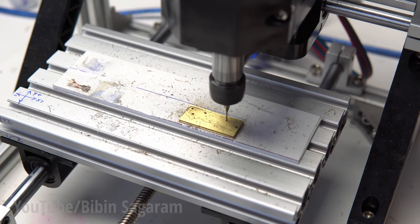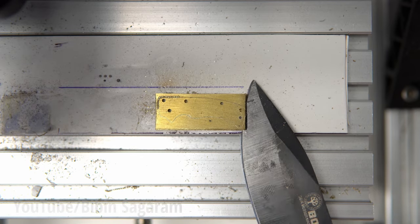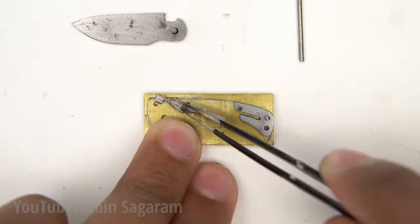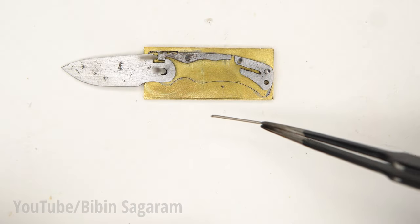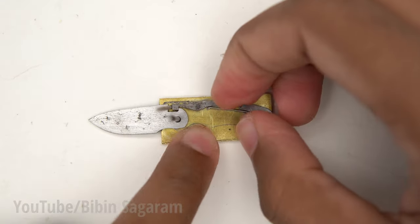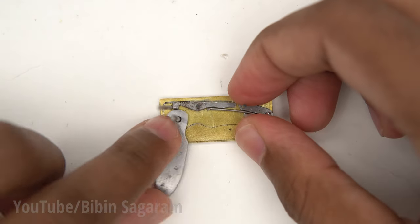Handle is also engraved and before cutting the handle out I am going to do a fitting test. Spring for the locking mechanism is cut from an old spring and has a diameter of 0.6mm. Blade and lock are sanded such that there is no slope in the blade.